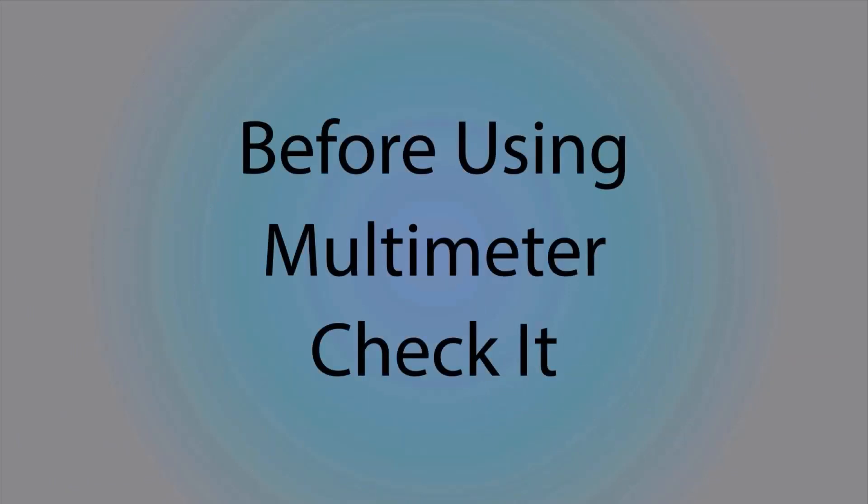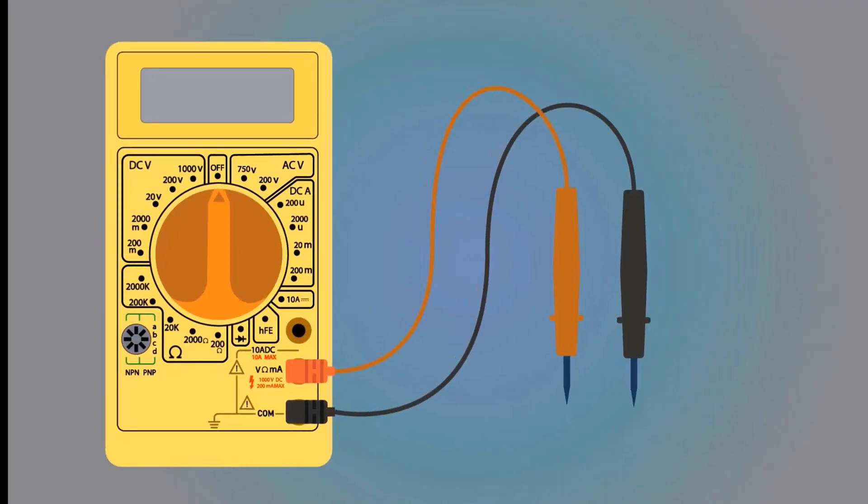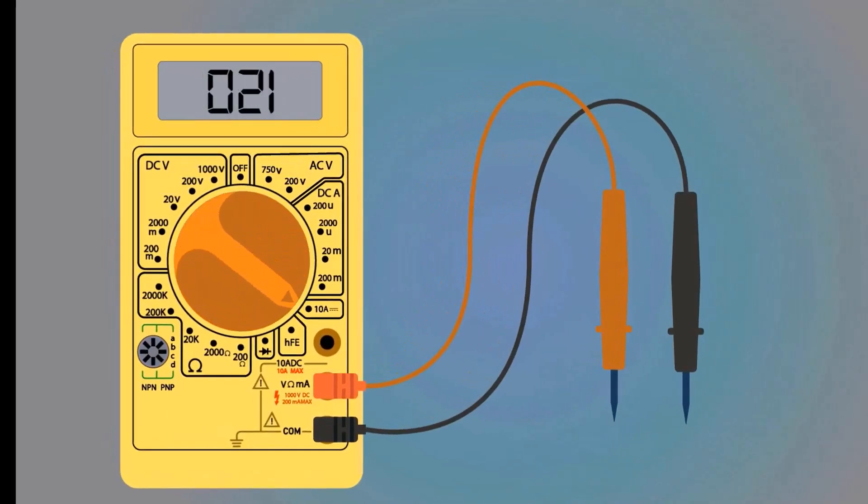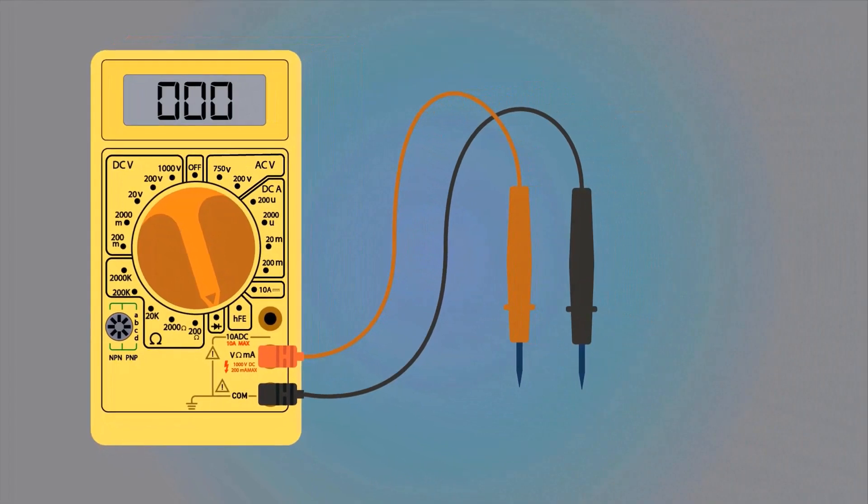Before using the multimeter, check whether it is working or not. Take a multimeter, move the selector switch to continuity. Short both probes. When the negative and positive terminals meet, the meter will produce a sound. This means the multimeter is okay and ready for use.